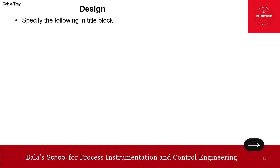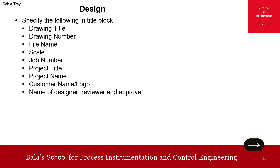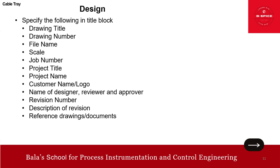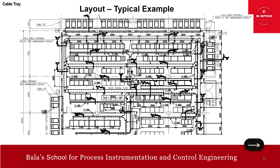Finally, the title block should include: drawing title, drawing number, file name, scale, job number, project title, project name, customer name, logo, name of the designer, reviewer, approver, revision number, description of the revision, and reference drawings. These are the contents and the procedure to follow before going into the actual cable tray design.